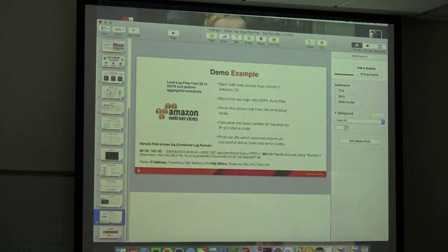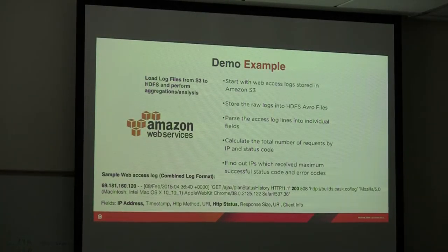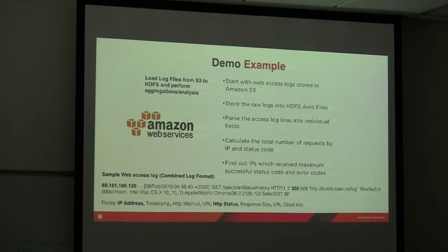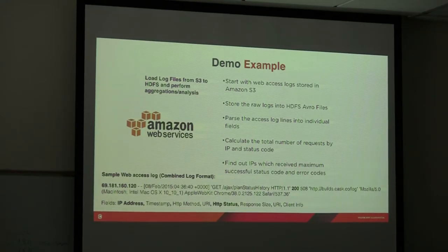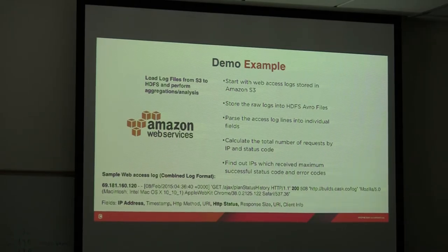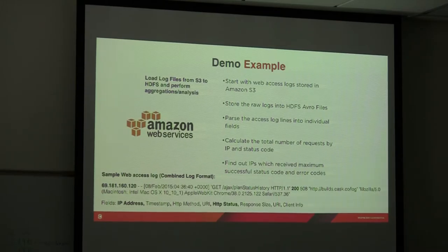Here's the use case: I have Apache access web logs sitting in an S3 bucket. I want a pipeline that loads them into Hadoop into parquet files and makes that accessible with SQL. Then I want to do some analytics — the total number of requests by IP and status code, and the top URIs. The logs are standard Apache CLF format.